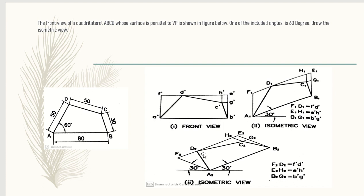Similarly, you can go for the horizontal isometric view and draw it the same way. The only thing is that when drawing the horizontal isometric view, you have to see that these two inclinations are 30 degrees — that is, two sides are inclined 30 degrees with the baseline. With this, I am finishing off today's lecture. Thank you.